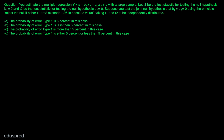In this video, I am going to solve this question. You estimate the multiple regression y equal to a plus b1 x1 plus b2 x2 plus u with a large sample. Let t1 be the test statistic for testing the null hypothesis b1 equal to 0, and t2 be the test statistic for testing the null hypothesis b2 equal to 0. Suppose you test the joint null hypothesis that b1 equal to b2 equal to 0 using the principle: reject the null if either t1 or t2 exceeds 1.96 in absolute value. Taking t1 and t2 to be independently distributed, we have to choose which one of the options is correct.